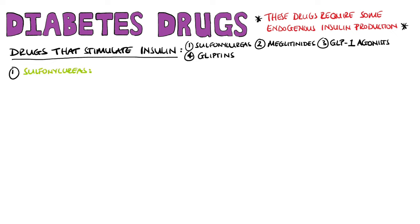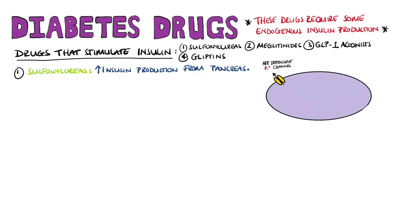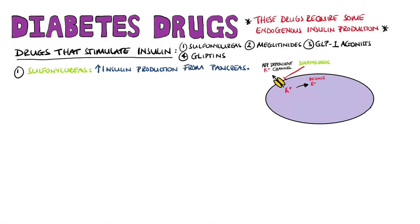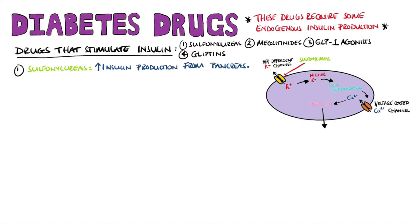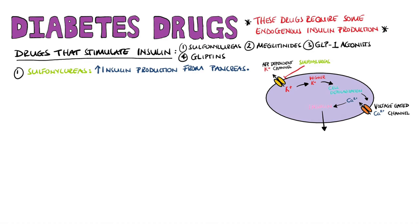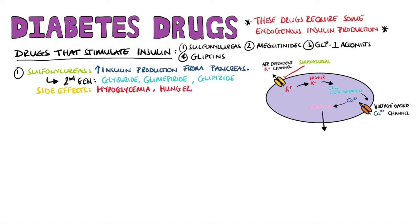Sulfonylureas increase the amount of endogenous insulin released by the pancreas. They work by binding the ATP-dependent potassium channel on beta cells, causing potassium channels to close, which depolarizes the membrane, opens voltage-gated calcium channels, and triggers insulin release. Second-generation examples include glyburide and glimepiride, which have a long duration, and glipizide, which has a shorter duration and a lower risk of hypoglycemia. Side effects include hypoglycemia, hunger, and weight gain.